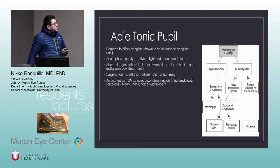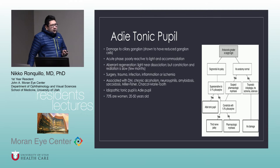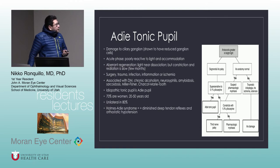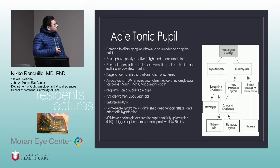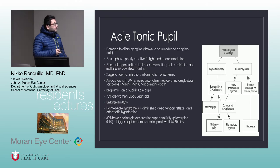Adie's tonic pupil is associated with several systemic diseases including diabetes, chronic alcoholism, neurosyphilis, amyloidosis, sarcoid, Miller-Fisher syndrome, and Charcot-Marie-Tooth. After ruling these out, the idiopathic tonic pupil is Adie's pupil. Epidemiology: 70% are women in their mid-age (20–50 years). It's usually unilateral in 80% but can be bilateral. Holmes-Adie syndrome is Adie's tonic pupil plus diminished deep tendon reflexes and orthostatic hypotension. Eighty percent have cholinergic denervation supersensitivity to low-dose pilocarpine — the larger Adie's pupil becomes the smaller one, but we must wait 45 to 60 minutes.